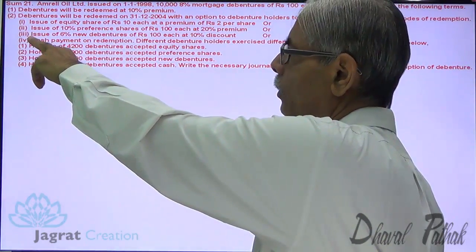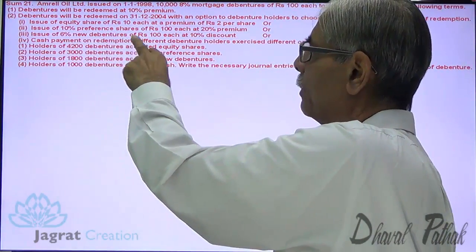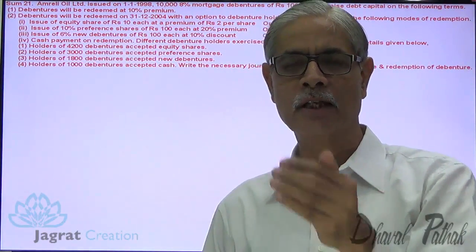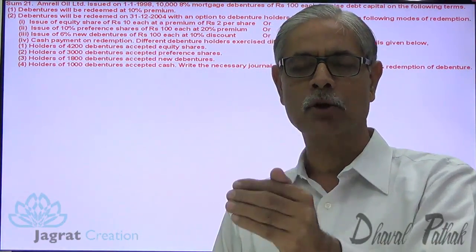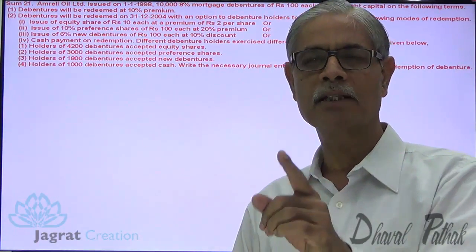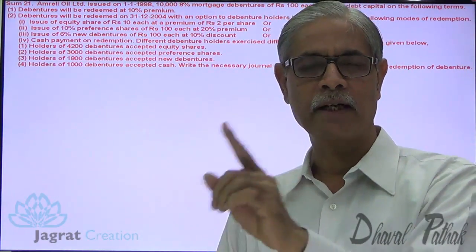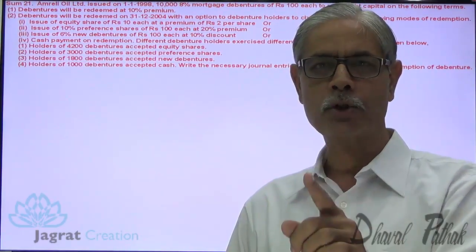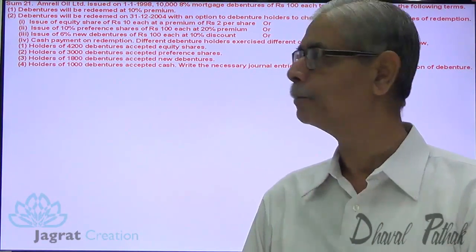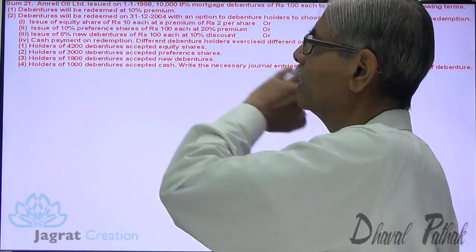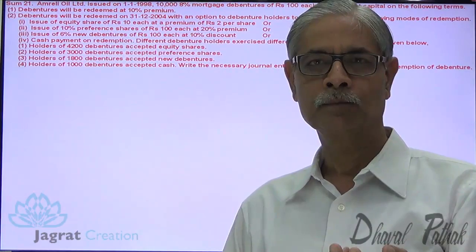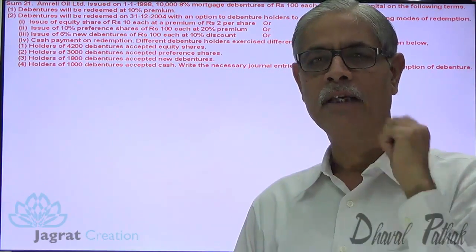Third option: issue 6% new debentures at 10% discount. Old debenture holders can have new debentures of the company, but these new debentures will be given at 10% discount, so issue price of this new debenture is 90. Cash payment is the fourth option - those who are willing to have cash will be given cash.